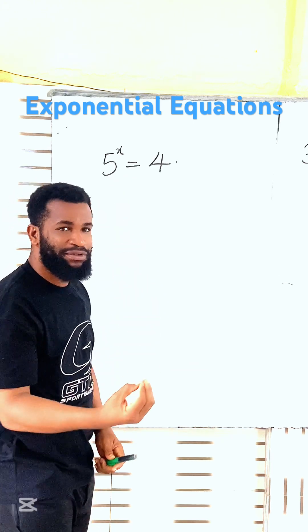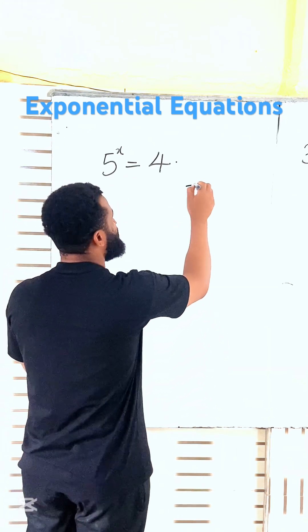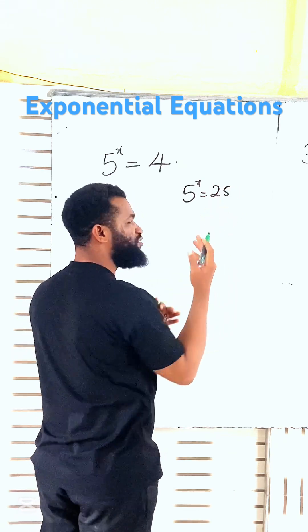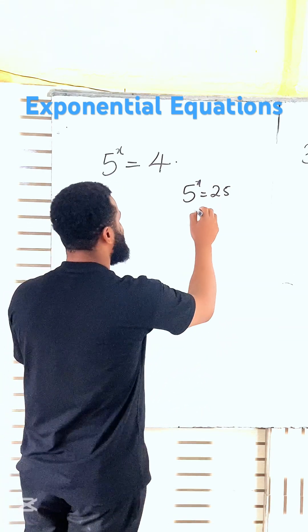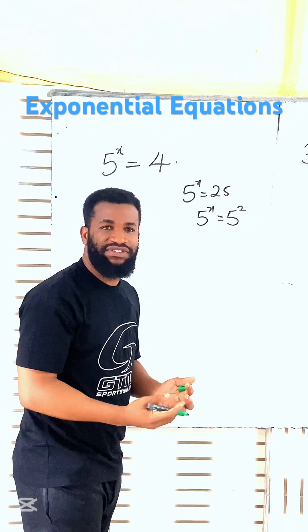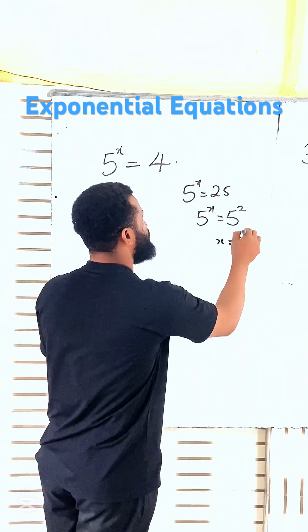We have this problem, it's a very big problem because if I have 5 raised power x equal to maybe 25, it's going to make sense. We are going to have that 5 raised power x is going to be 5 raised power 2, then I will say that x is equal to 2.